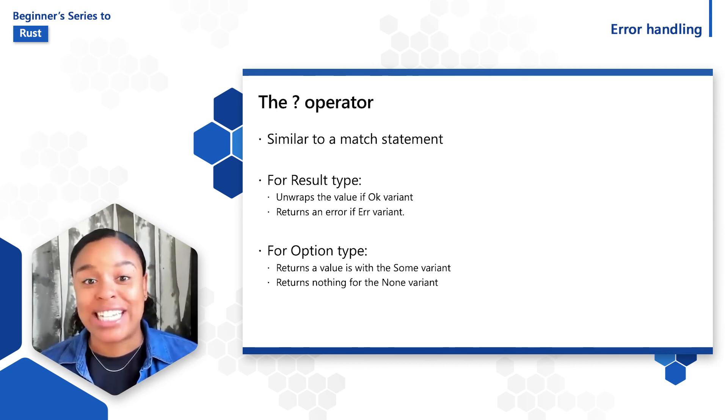That is the overview of Rust error handling features. The various options for error handling exist to help you write more robust code. Becoming familiar with when and how to use these error types can make all the difference in ensuring your code is reliable and safe. In the next video, I'll explore more code examples using the various forms of error handling.